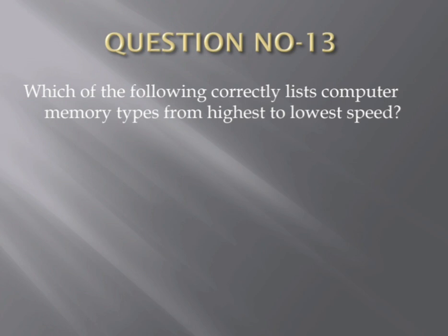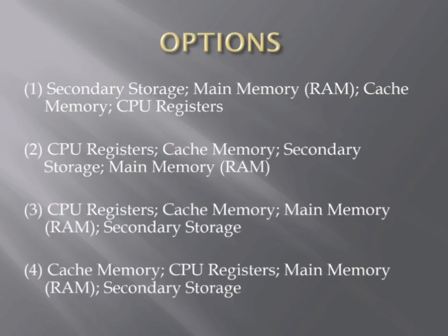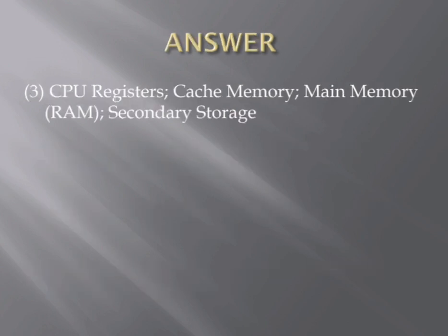Question number thirteen. Which of the following correctly lists computer memory types from highest to lowest speed? Options: (1) Secondary Storage, Main Memory, Cache Memory, CPU Register; (2) CPU Register, Cache Memory, Secondary Storage, Main Memory; (3) CPU Register, Cache Memory, Main Memory, Secondary Storage; (4) Cache Memory, CPU Register, Main Memory, Secondary Storage. The correct answer is the third one — CPU Register, Cache Memory, Main Memory, Secondary Storage.